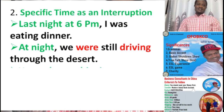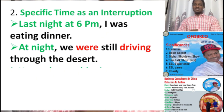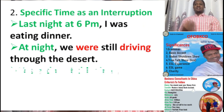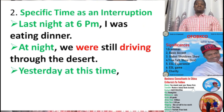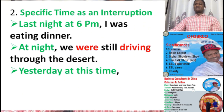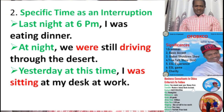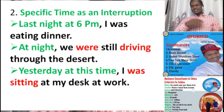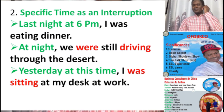Because the time indicator comes after the main clause, you're going to use a comma there. But if the main clause comes after the time clause, there is no comma. Another example: 'Yesterday at this time' — this is a specific time. 'I was sitting at my desk at work' — this was the action going on in the past, interrupted by the specific time 'yesterday at this time.' You're going to see a comma there.